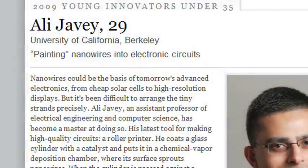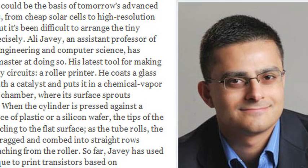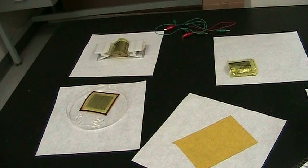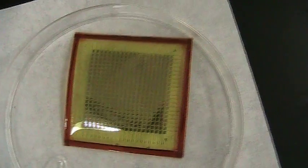Ali Javey, who is one of our top 35 young innovators of 2009, has developed a simple way to paint these materials over large areas to make many kinds of high-efficiency, low-power electronics, including the electronic skin, as well as solar cells and light sensors.